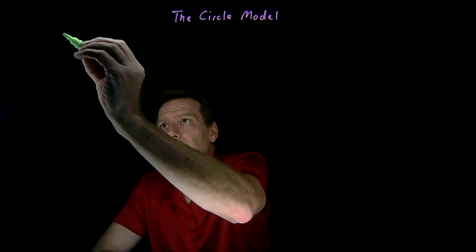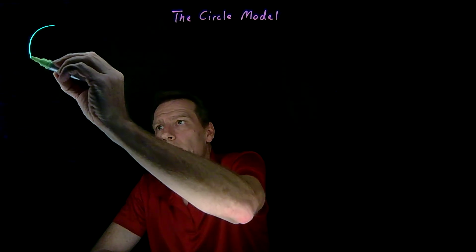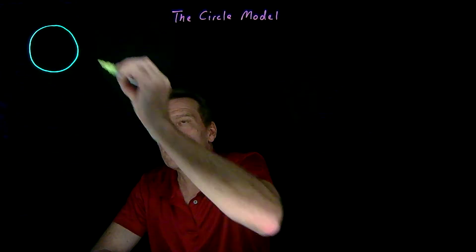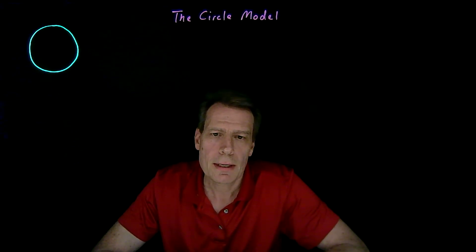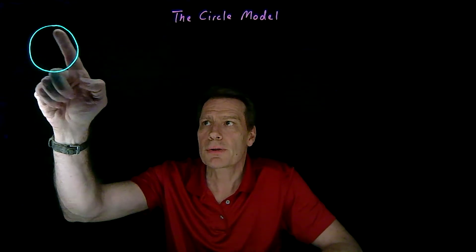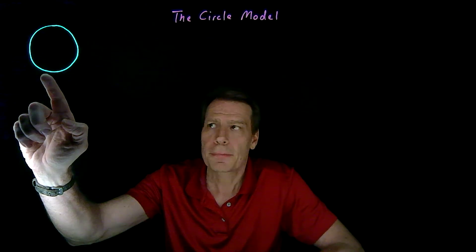We begin with the Hotelling line of product characteristics, and imagine taking that line and bending it into a circle, so that instead of a line, we have a circle of possible product characteristics that firms might choose. Just as in the Hotelling model, we'll assume that consumers have ideal points around that circle — meaning that's the product characteristic the consumer would most like, and the consumer becomes worse off as the product characteristics move away from that ideal point.